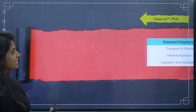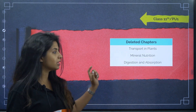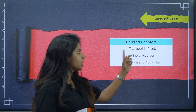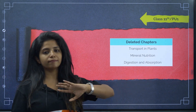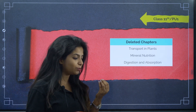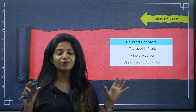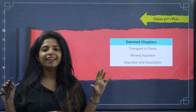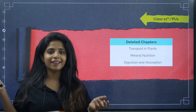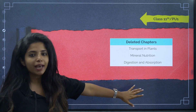Now let's see what's deleted in 11th. Fully deleted chapters include: transport in plants and mineral nutrition. Digestion and absorption is also deleted. Please, if you're in 11th, don't prepare for exams on these topics — though if you want to study them for knowledge, that's totally fine. That's the content overview for 11th.